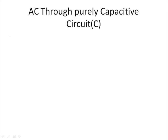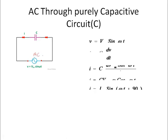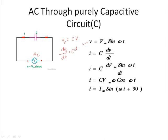Let's start with a purely capacitive circuit — a circuit with only capacitors connected to an AC voltage source. The voltage equation is V equal to Vm sin omega t. To find the current, we use the relationship Q equal to CV, so dQ by dt equals C into dV by dt, which gives us the current. Substituting the instantaneous voltage Vm sin omega t, we differentiate with respect to t.